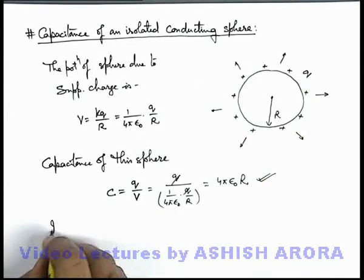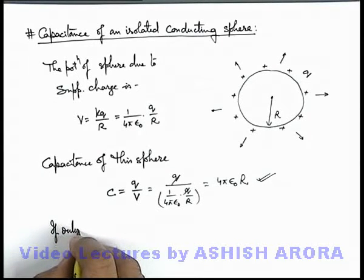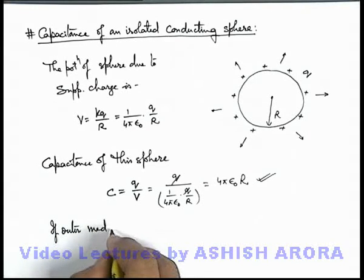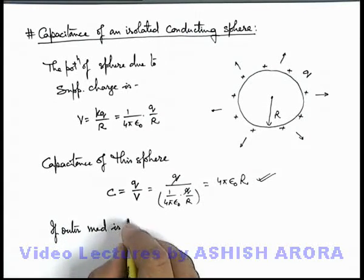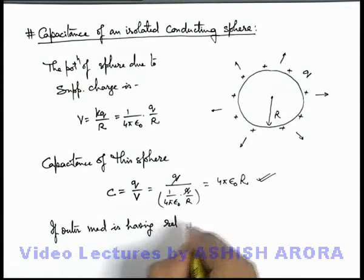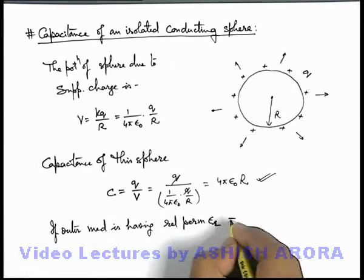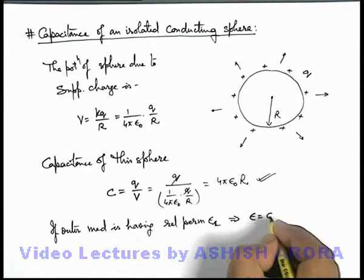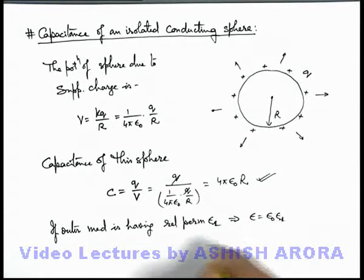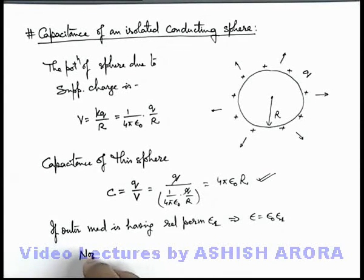Now, if the outer medium has relative permittivity εᵣ, this implies its permittivity can be written as ε₀ εᵣ. The capacitance becomes: